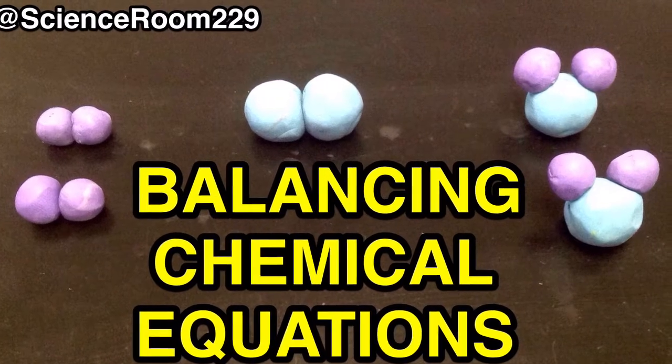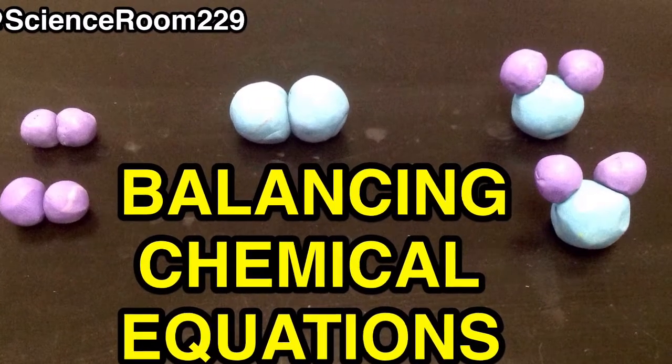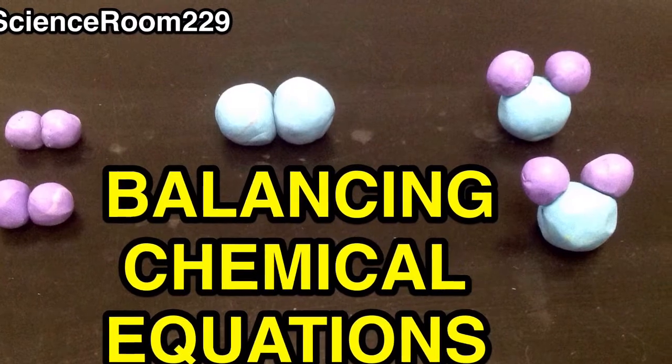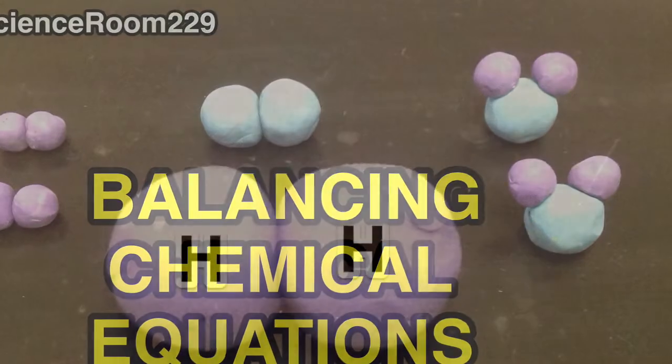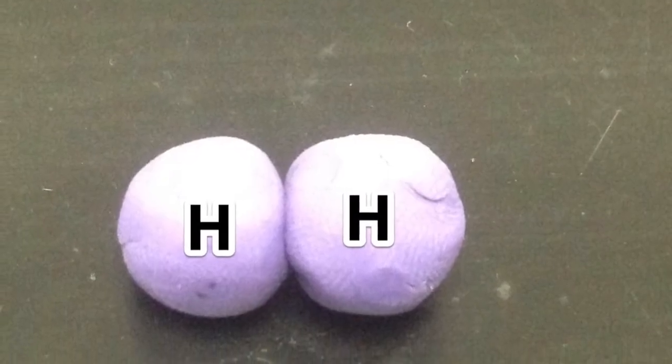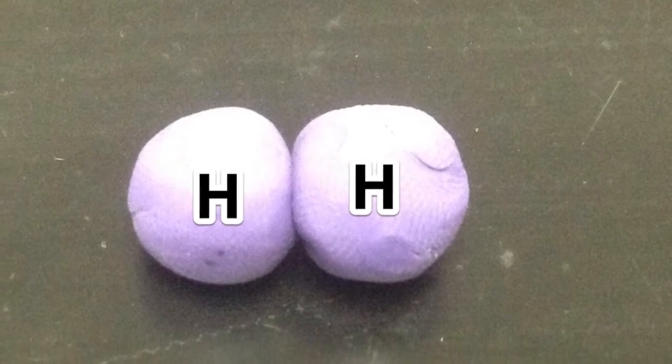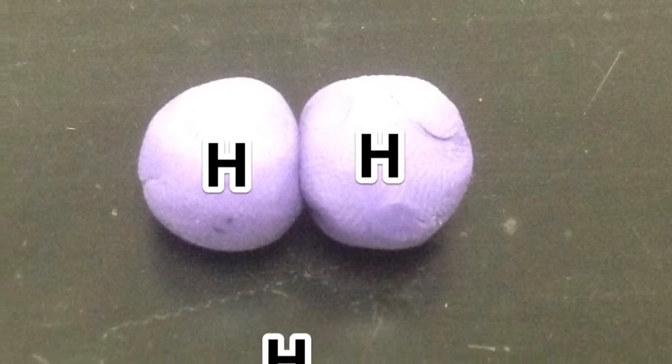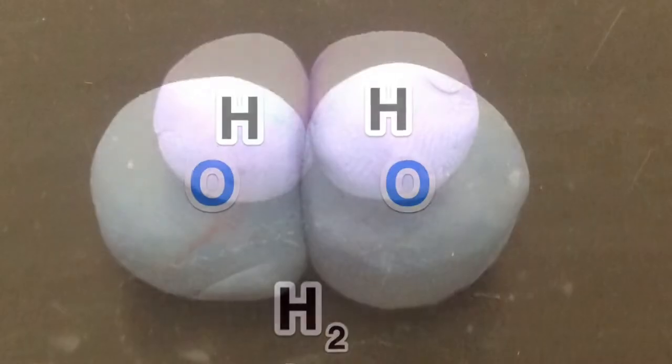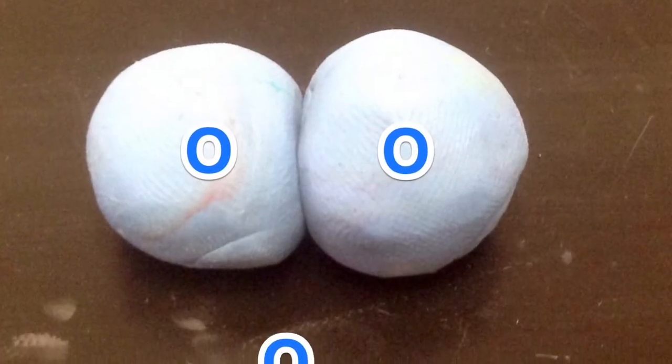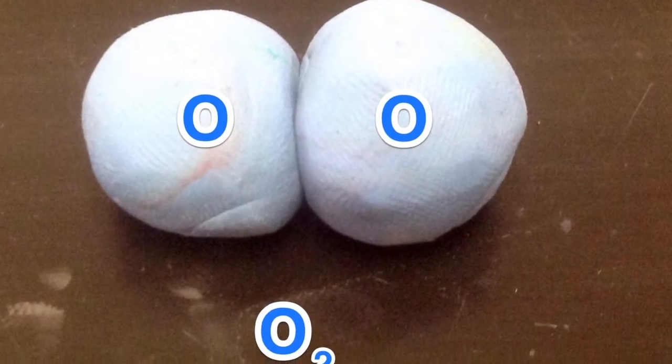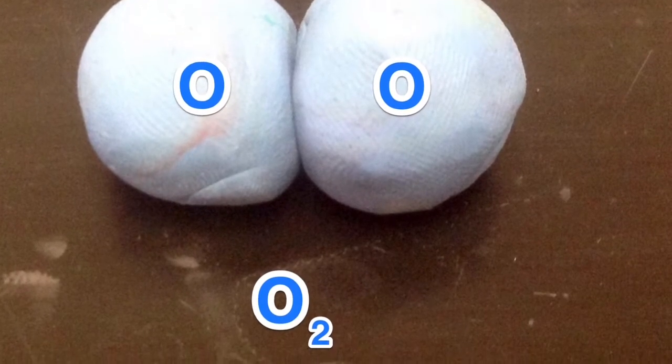Today we're going to look at balancing chemical equations using the chemical equation for water. Begin with the hydrogen molecule which is a diatomic molecule having two atoms of hydrogen. We also have a diatomic oxygen molecule having two atoms of oxygen.